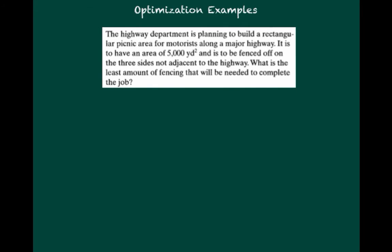The first example we want to look at deals with area, because maybe that's just the easiest to imagine. So it says here the highway department is planning to build a rectangular picnic area for motorists along a major highway. It's to have an area of 5,000 square yards, so that's going to be our constraint. It has to have at least 5,000 square yards, and it has to be fenced off on three sides that are not next to the highway. What is the least amount of fencing?